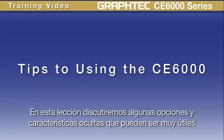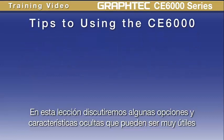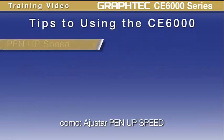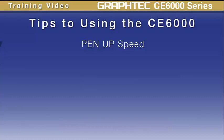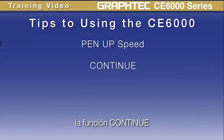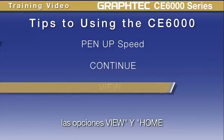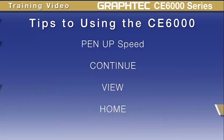In this lesson, we'll discuss some options and hidden features that are helpful for when the need arises. Some of these are adjusting the pen up speed, the continue function, and the view and home options.